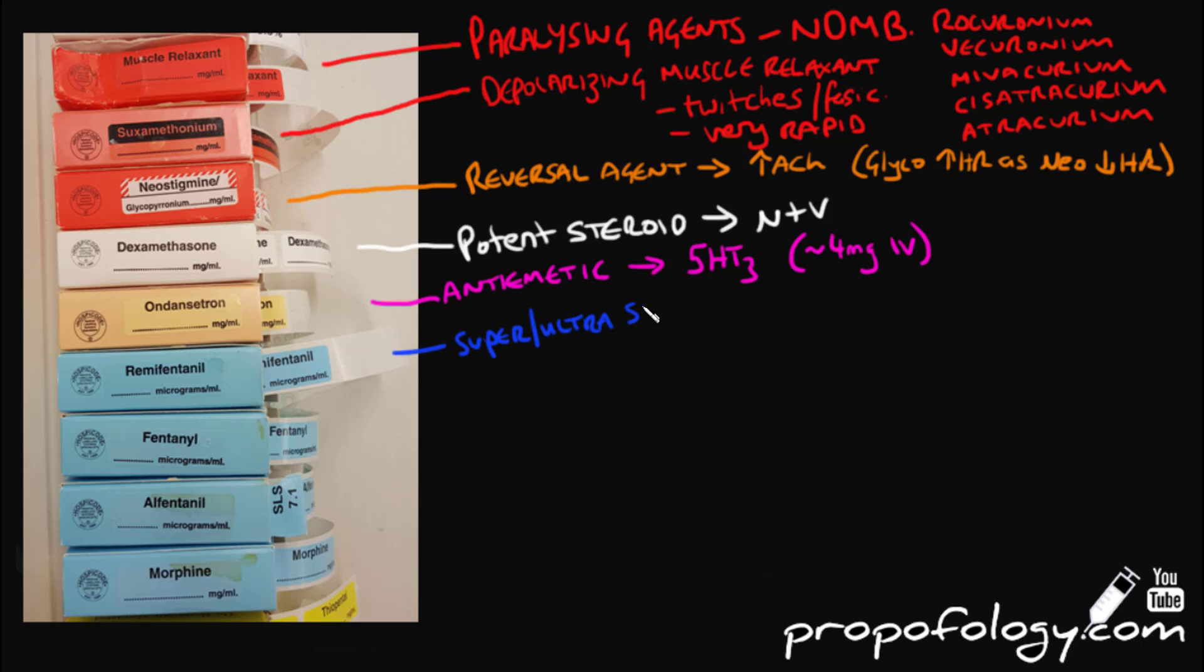Remifentanil is an ultra-fast acting opioid. It's normally given in theatre as an analgesic for surgical stimulus or in the intensive care unit for the patients who are intubated to give them tube tolerance. One of the great benefits of remifentanil is whenever you stop the infusion, and it's always given as an infusion, the effects stop very shortly afterwards within a couple of minutes.